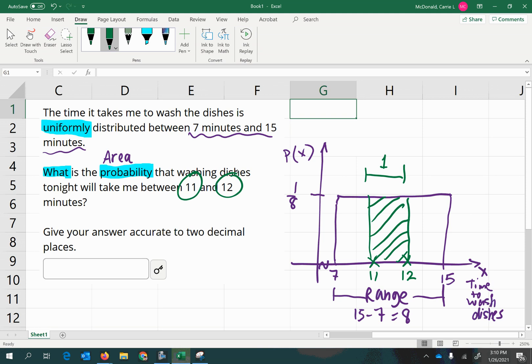So, 1 times 1 eighth will give me the area of that region. And so, my answer is 1 eighth. And then we just round that to two decimal places. So, 1 divided by 8 is 0.125. So, we're going to round it to 0.13.